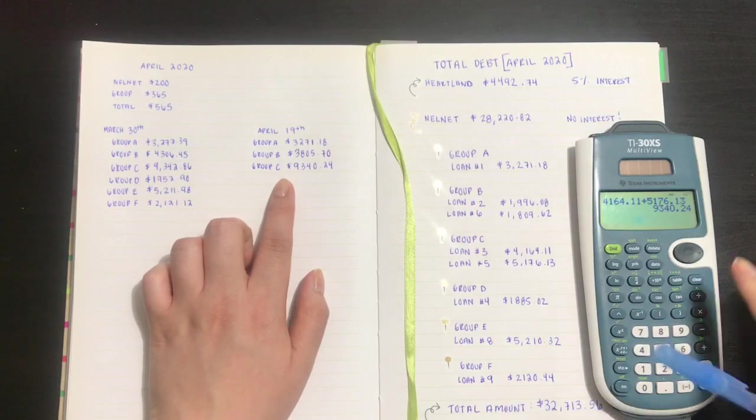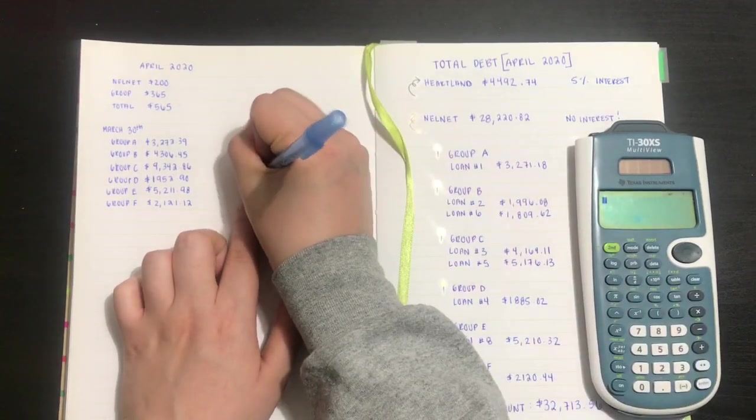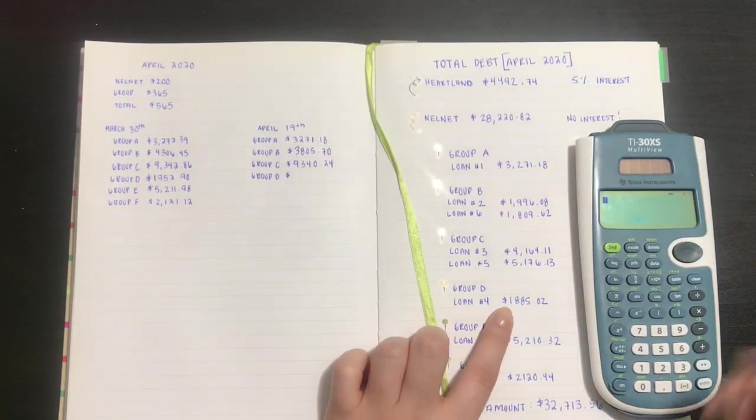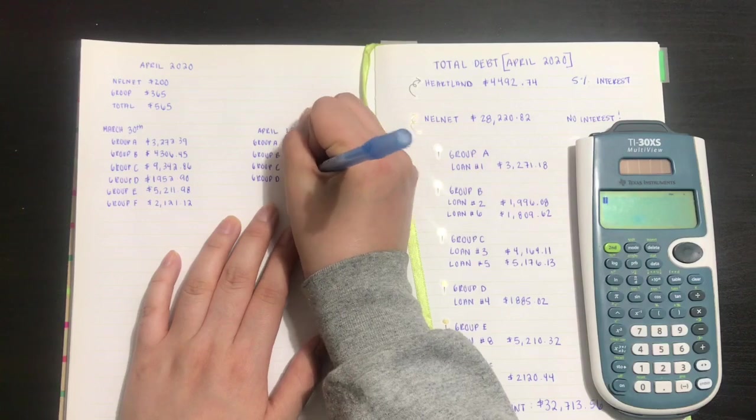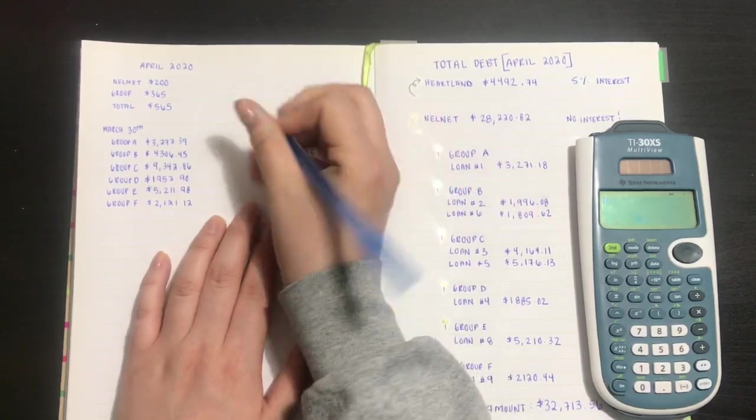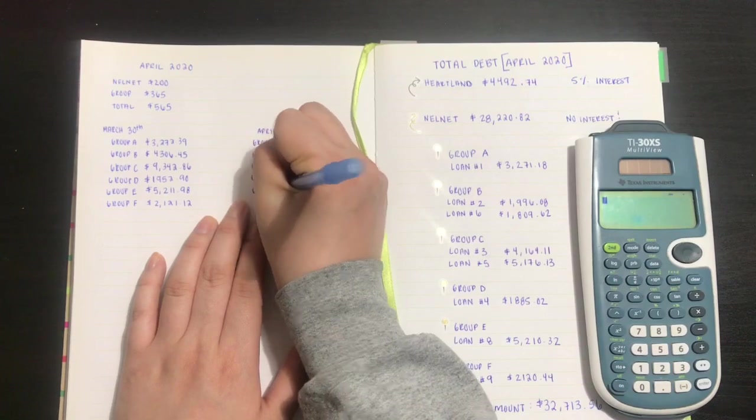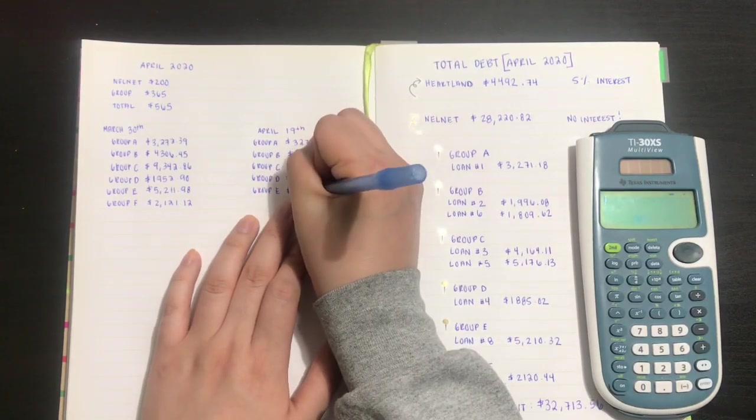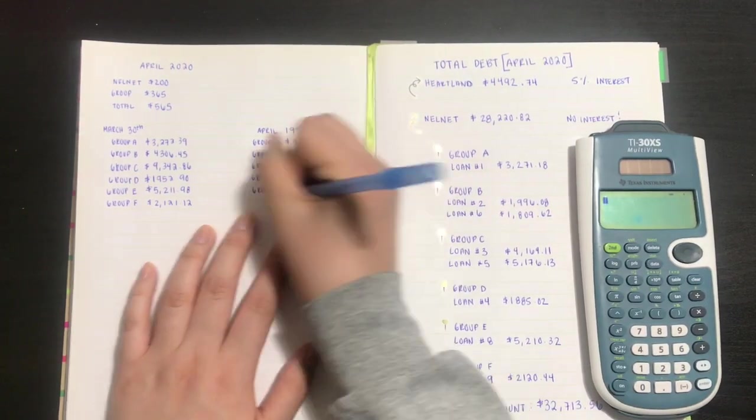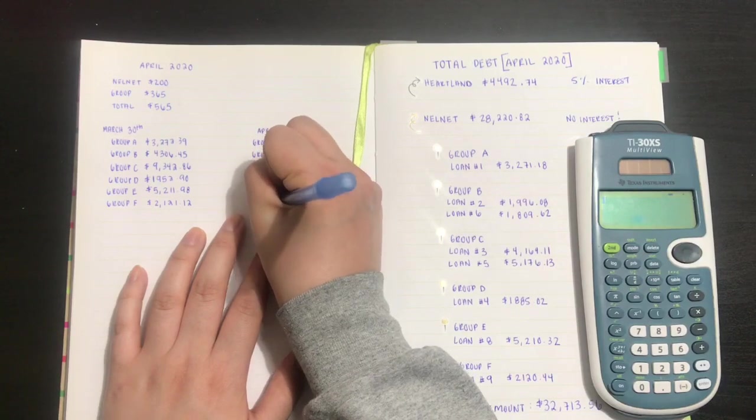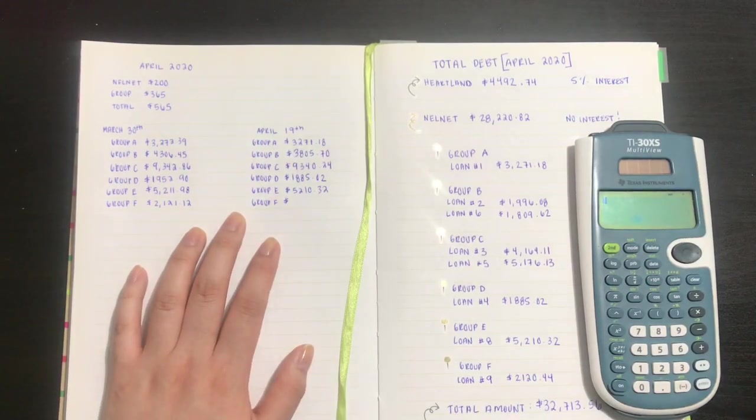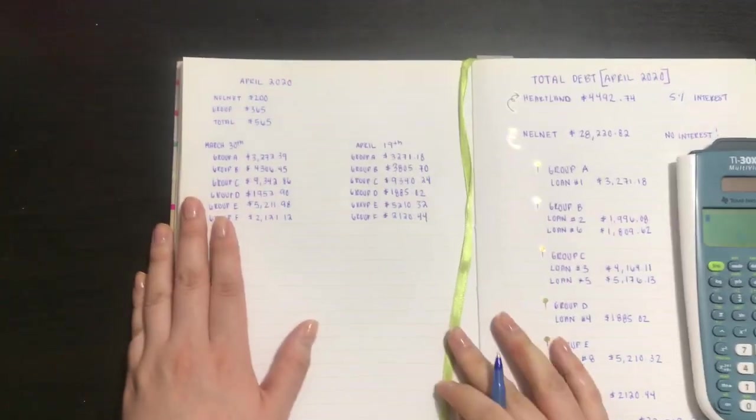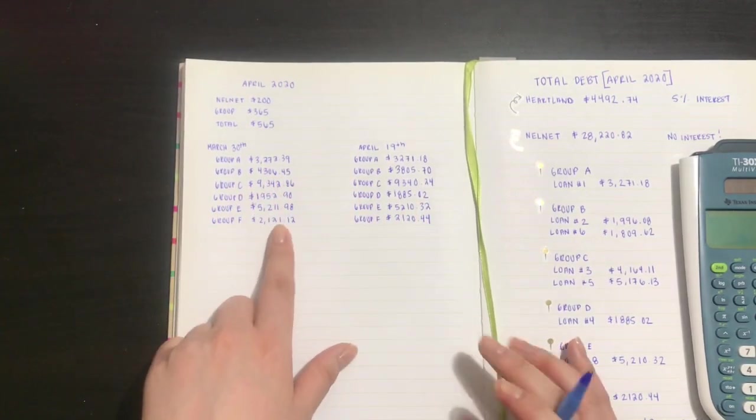Group D is now $1,885.02. Group E is now $5,210.32, and group F is now $2,120.44. So some of these only decreased by like a dollar or some cents.